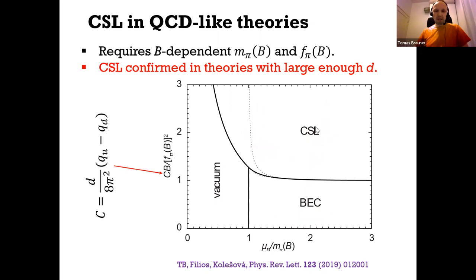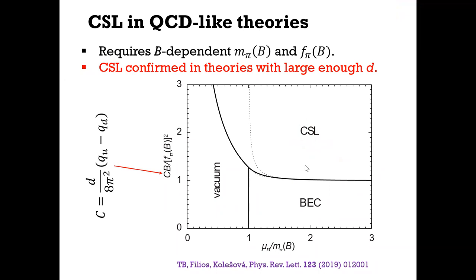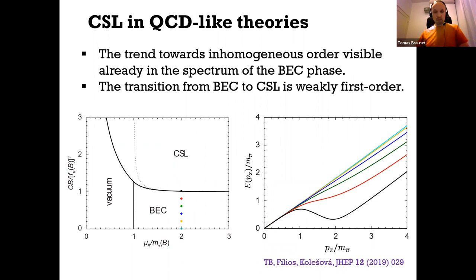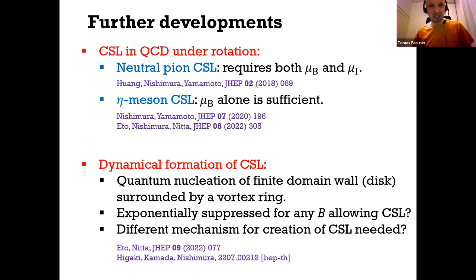This disproves the conjecture made by Kogut, Son, and Stephanov in 2001. The motivation was to find a theory that is in principle free of the sign problem — and therefore could be studied on the lattice — where one has an example of an inhomogeneous order. This provides a counterexample to their conjecture. I'll skip one technical detail and jump to conclusions, as I'm running out of time.